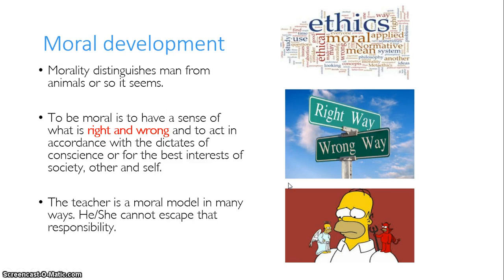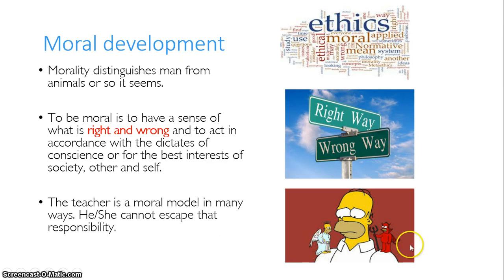When we talk about moral development, we are saying that morality is what distinguishes man from animals. Animals may do right and wrong, but they don't have a moral conscience, so to speak. Man has a moral conscience, or man should have a moral conscience. But depending on our environment and how we are brought up, that will determine the kinds of ethics that we subscribe to and the way we conduct our lives. Generally speaking, morality is having that sense of right and wrong — like having a good and a bad angel on either shoulder, as Homer Simpson has depicted.